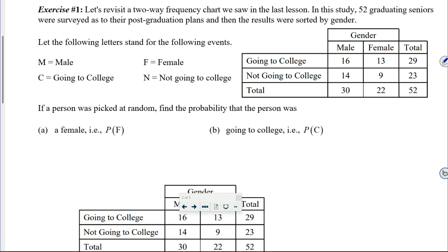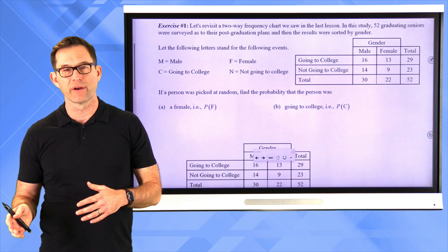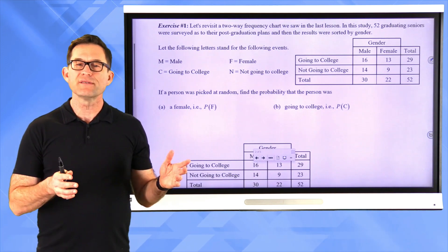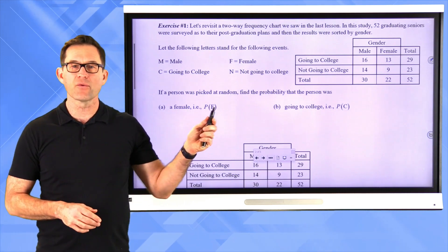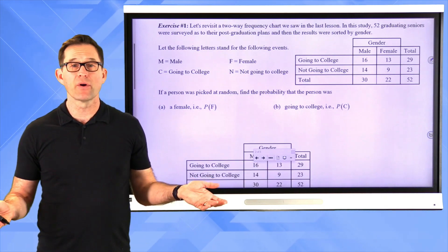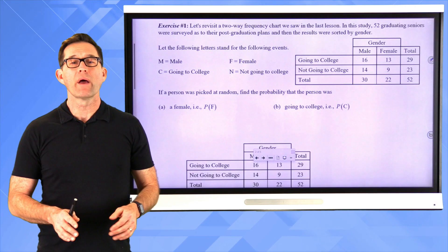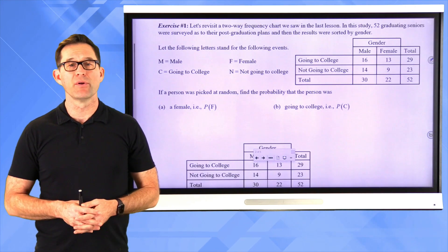Let's revisit a two-way frequency chart we saw in the last lesson. In this study, 52 graduating seniors were surveyed as to their post-graduation plans and then the results were sorted by gender — male, female, going to college, not going to college. If a person was picked at random, find the probability that the person was: letter A, female; letter B, going to college. Go ahead and figure out those two probabilities — this should be pretty quick.